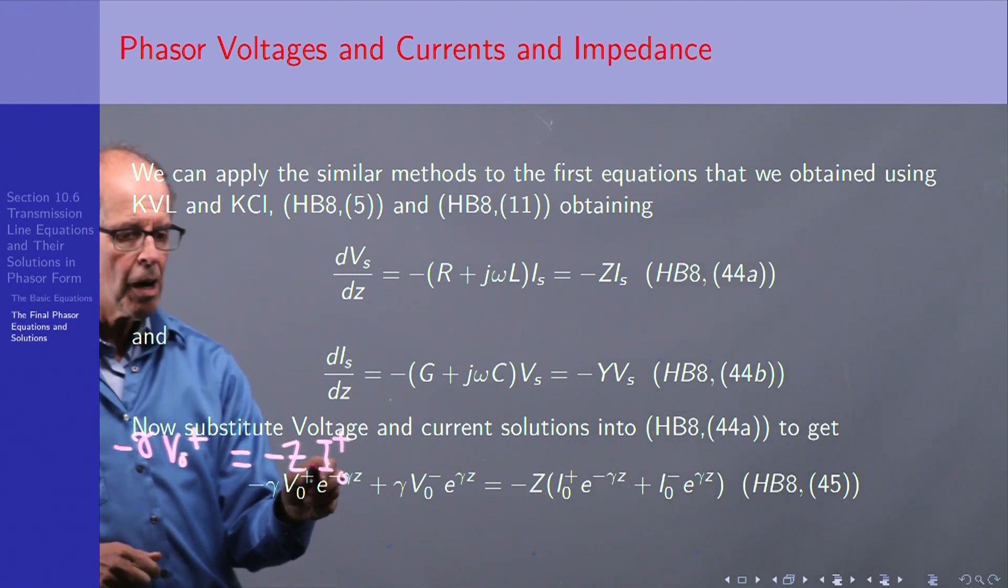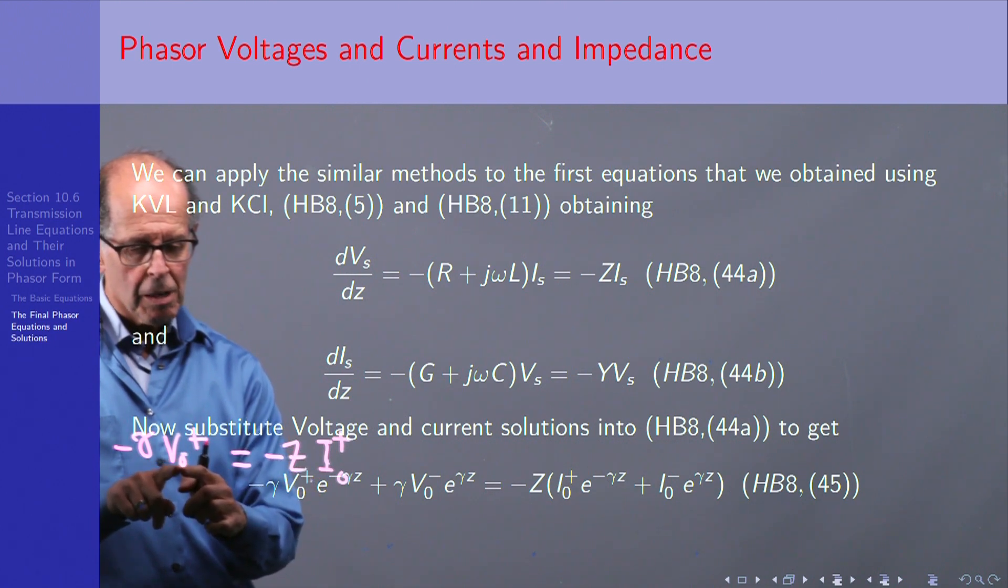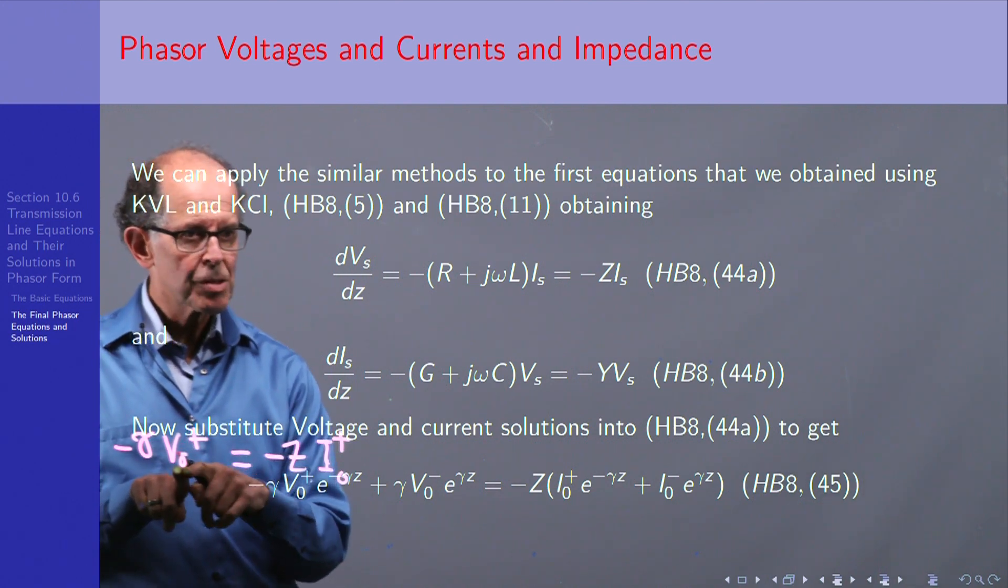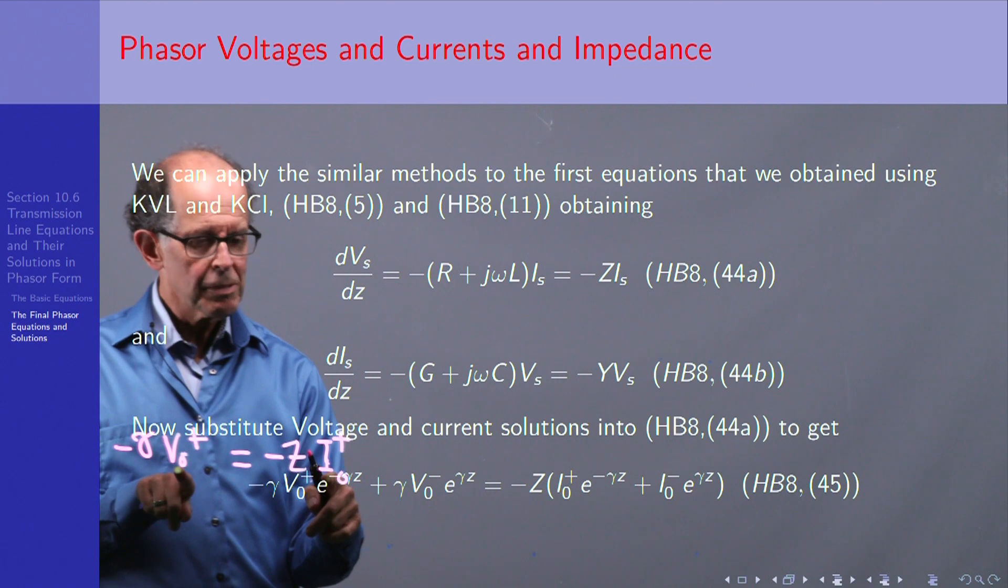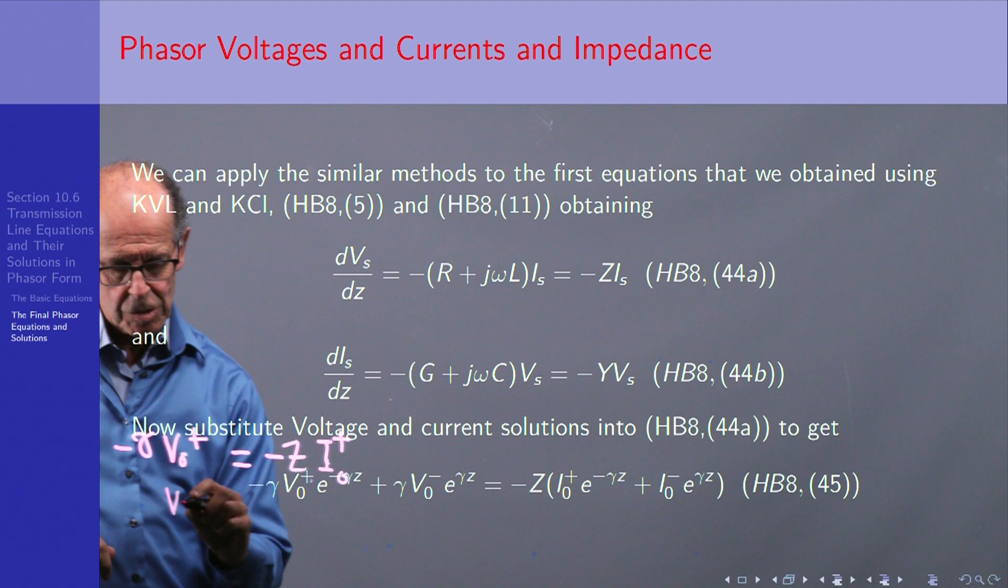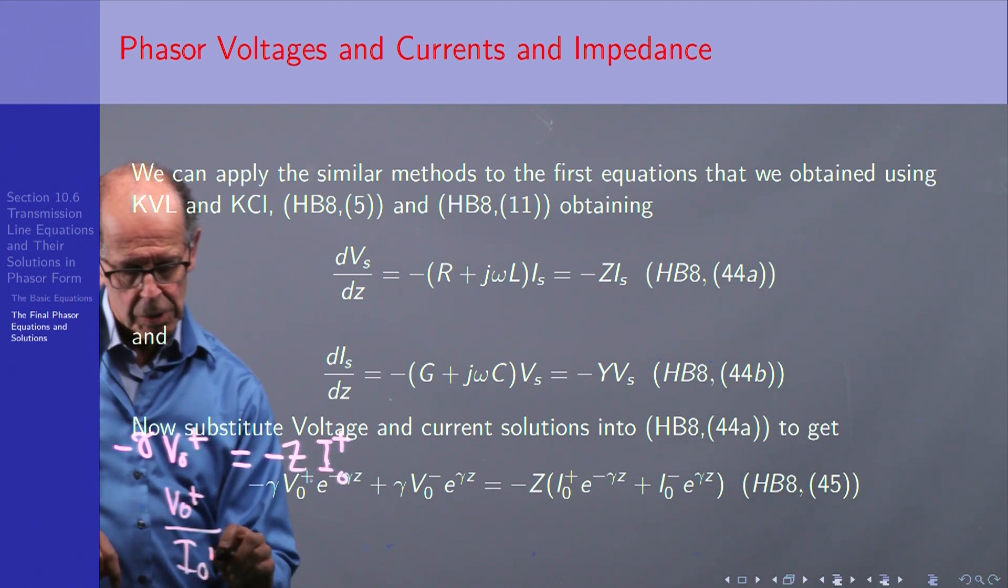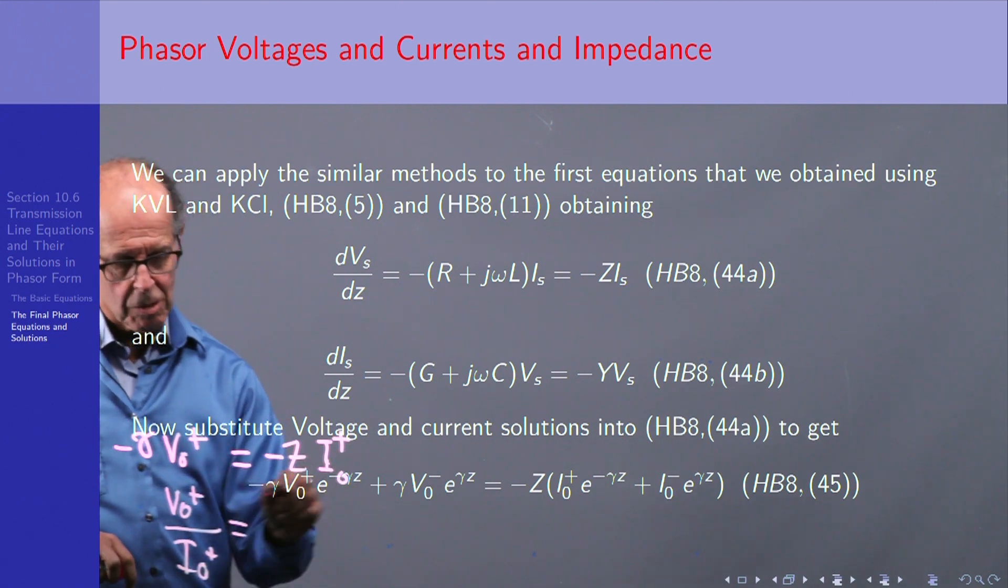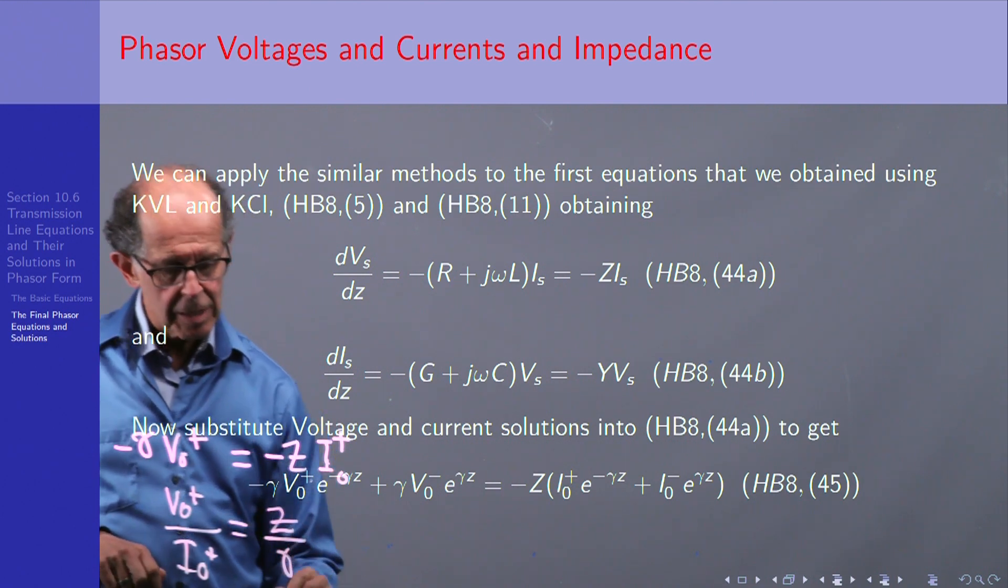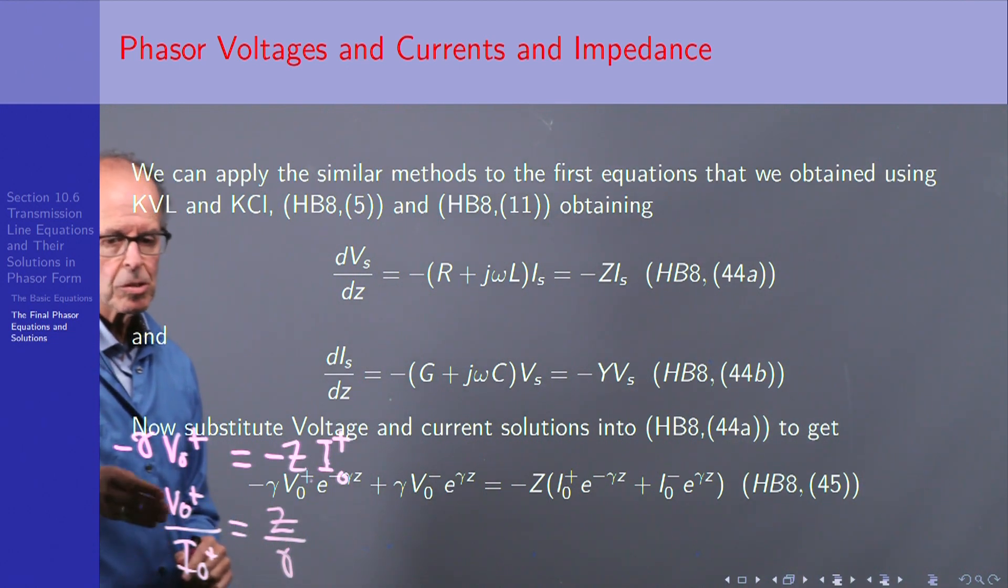Well, this is the Z we saw up top, but the ratio is what's important. So the ratio of the forward-traveling voltage amplitude, it could be complex, to the forward-traveling current is going to be the ratio. We can do the simple algebra: V₀⁺ over I₀⁺ is equal to, so V over I is equal to Z over γ, the minus signs cancelling out.